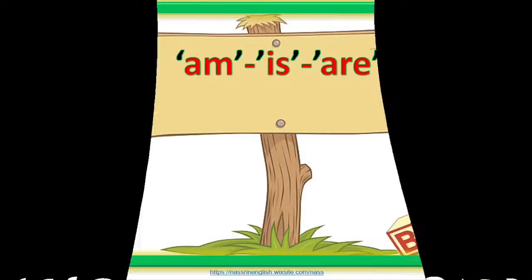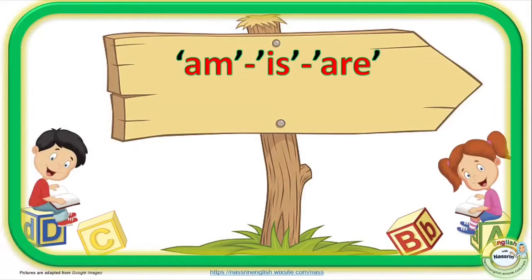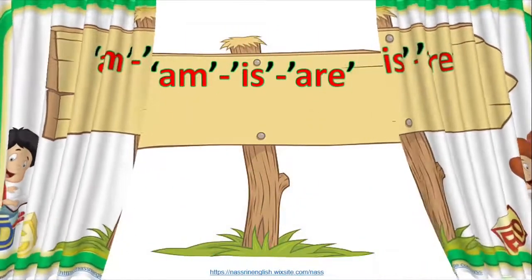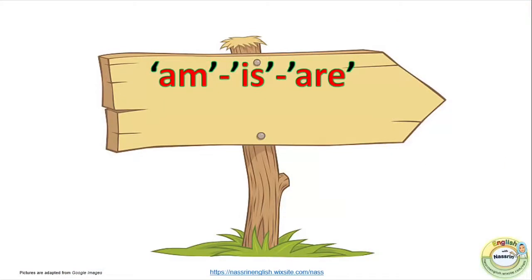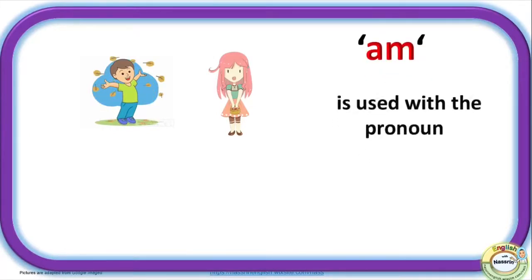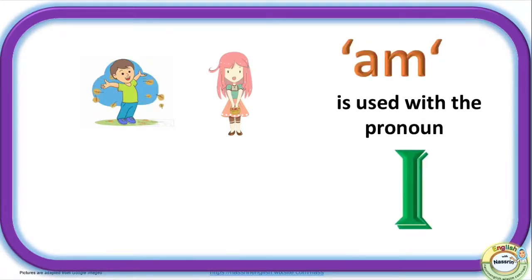Am, is, are. You have already learned about pronouns. Let's learn how these words are used with pronouns. Am is used with the pronoun I. Let's look at some examples.